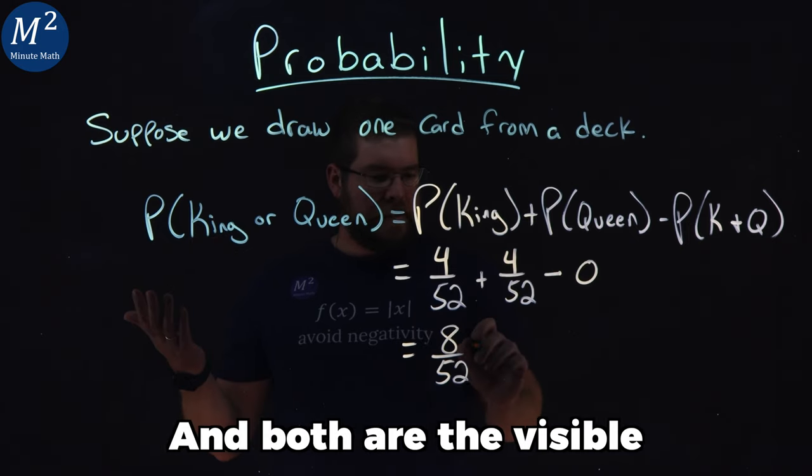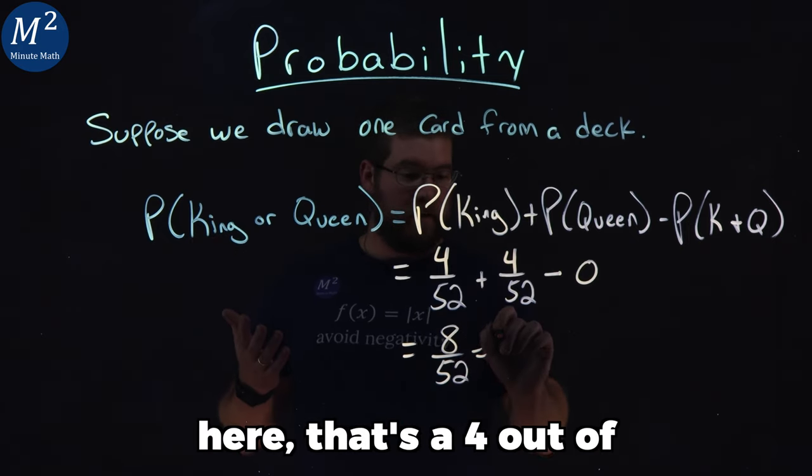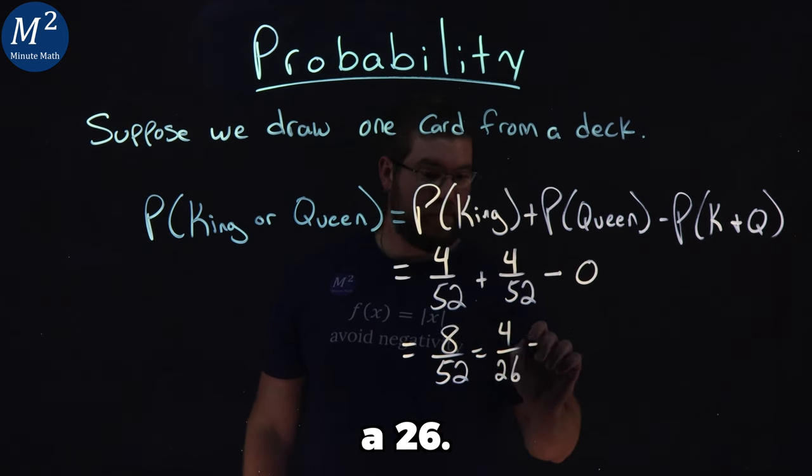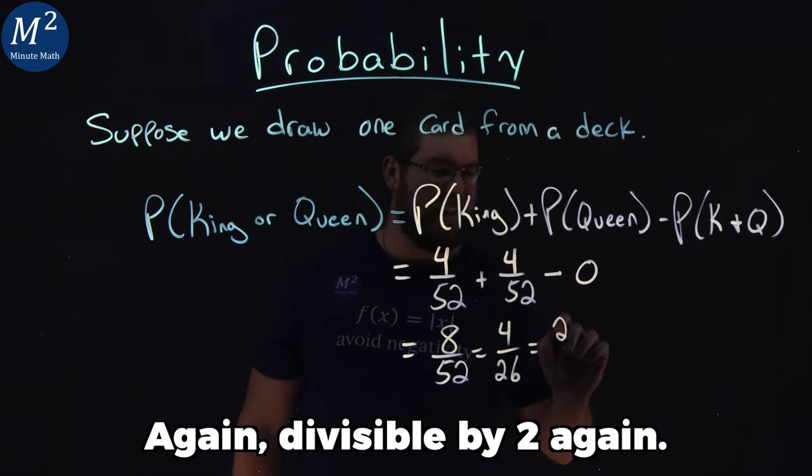And both are divisible by two. If you want to simplify here, that's four out of 26, divisible by two again. That's two out of 13.